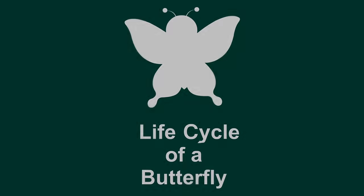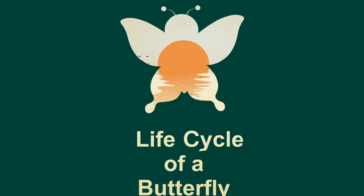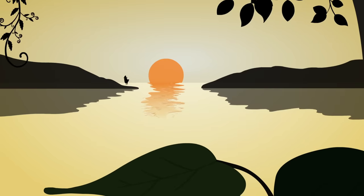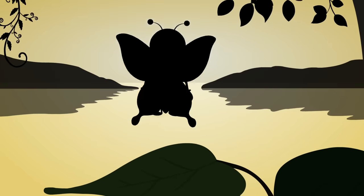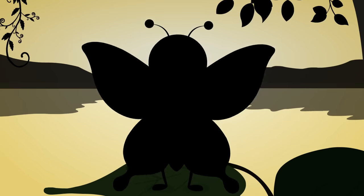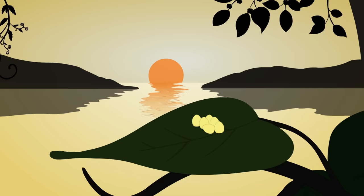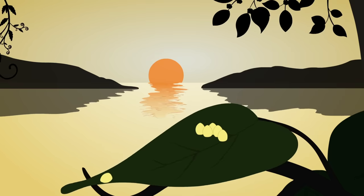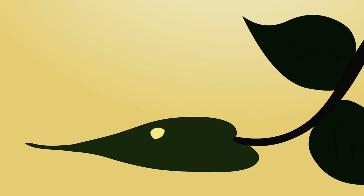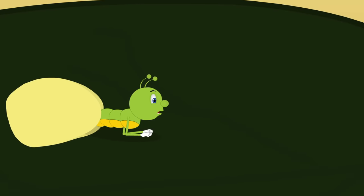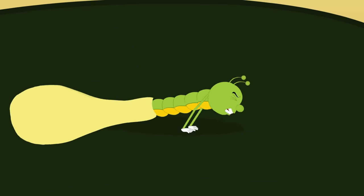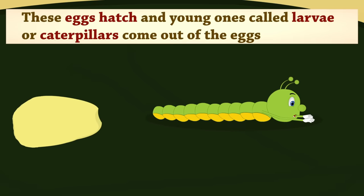Our topic for today is Life Cycle of a Butterfly. A butterfly lays eggs on the leaves of a plant. These eggs hatch, and young ones called larvae, or caterpillars, come out of the eggs.